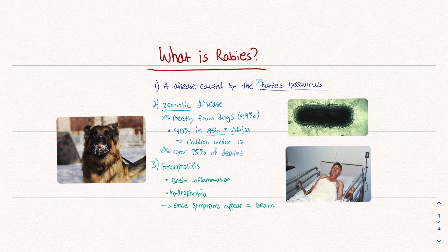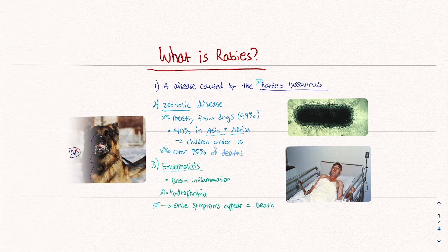It causes a condition called encephalitis, which is brain inflammation. And this results in a whole host of very interesting symptoms. One of which I think a lot of people have heard of is hydrophobia — being afraid of water. I'm going to find a clip and put it in the description to kind of show you guys what that looks like. Now, the bad thing is that once neurological symptoms appear, there's pretty much a hundred percent chance you're going to die.